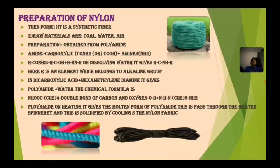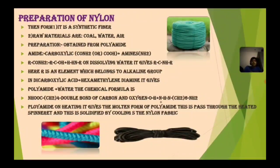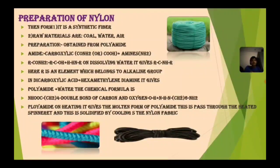In dicarboxylic acid and hexamethyl diamine, it gives polyamide plus water. The chemical formula involves NH–CO–CO–C–(CH₂)₄ double bond carbon and oxygen, plus N–H–(CH₂)₂–NH₂. Polyamide on heating gives the molten form of polyamide. When heated, it is passed through the spinneret, solidified by cooling, and then we get nylon fabric. By this process we get nylon fabric, which is also used in ropes.